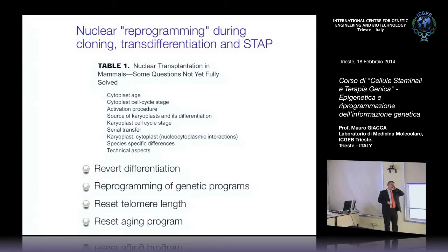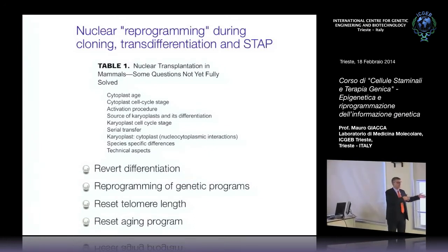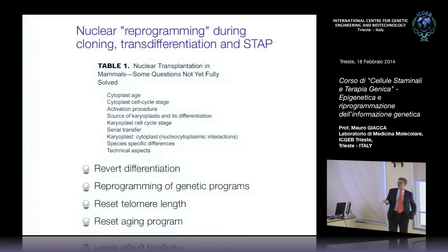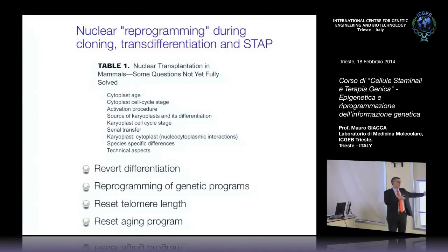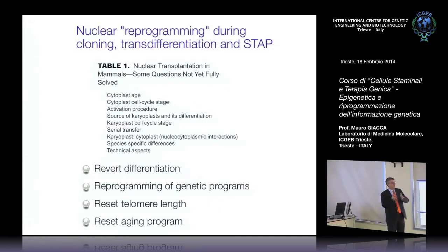Dopodomani vi racconterò che cos'è l'invecchiamento, uno dei problemi più affascinanti e totalmente sconosciuti, perché noi viviamo un massimo di 120 anni e un topo 2 per esempio, e come si resetta il programma dell'invecchiamento stesso. La pecora Dolly vive esattamente come vive una pecora normale, quindi il suo programma di invecchiamento è completamente resettato.